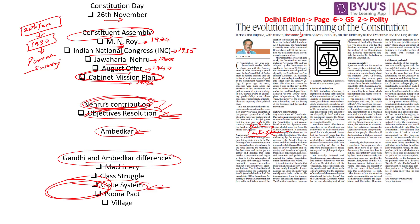Mahatma Gandhi was against modern machinery and modern civilization, but this was in contrast to Ambedkar's view. According to Ambedkar, modern machinery enables humans to have leisure time. On the class struggle — the conflict between employers and employees, landlords and tenants, rich and poor — Gandhi wanted these classes to be diluted over time. But Ambedkar, a trained economist, knew such classes would exist in society and was skeptical about the rich protecting the interests of the poor.